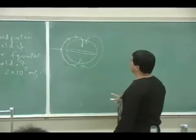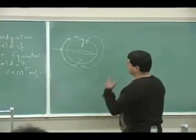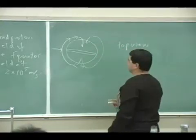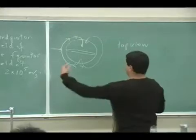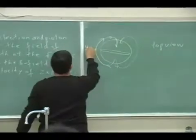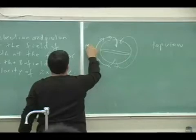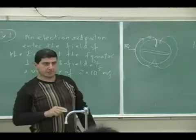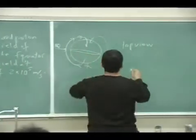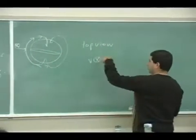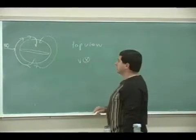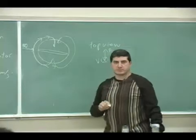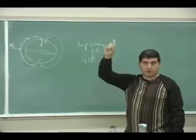It could come in perpendicular at the equator. If you were looking top down, the velocity would be going into the board, and then the B field is going towards the North Pole of the Earth.